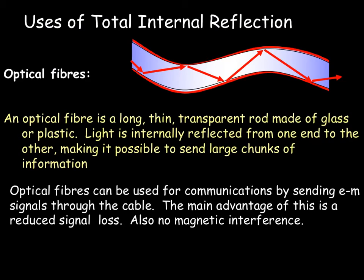Other uses of total internal reflection. The most famous one is fiber optics. These are the optics used for all television, telephone, audio, digital communication these days. Anything which involves proper cabling is fiber optics. Total internal reflection is fiber optics. Basically, light is bounced inside a small cable. The cable is made of glass. They're glass fibers. Total internal reflection keeps the light inside. Optical fibers are long, thin, transparent rod made of glass or plastic. Light is internally reflected from one end to the other, making it possible to send large chunks of information.